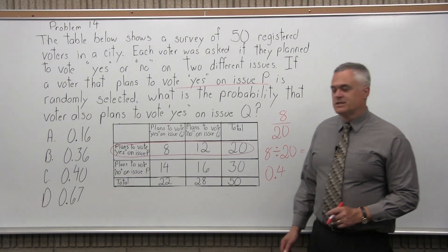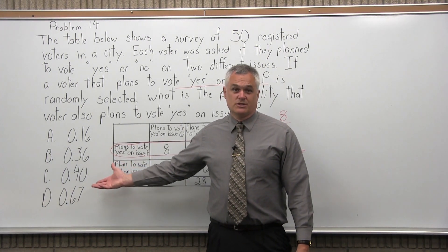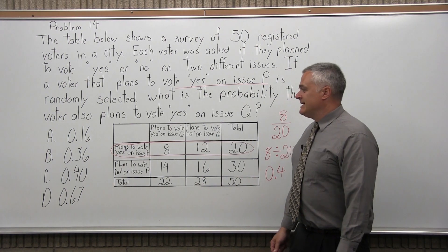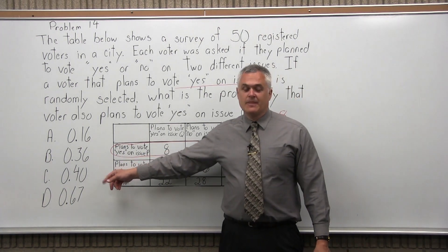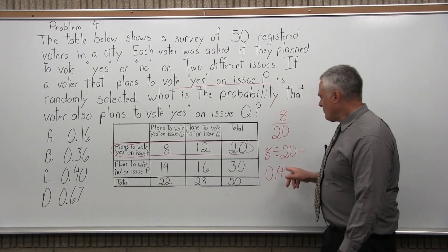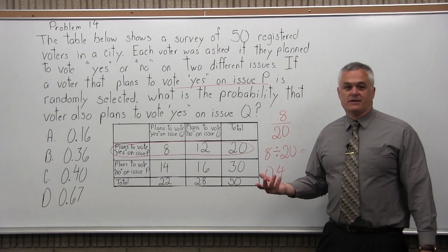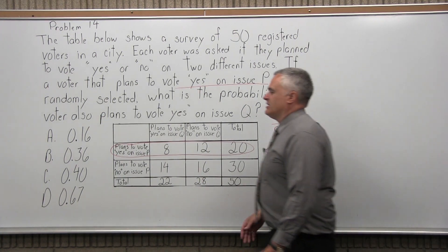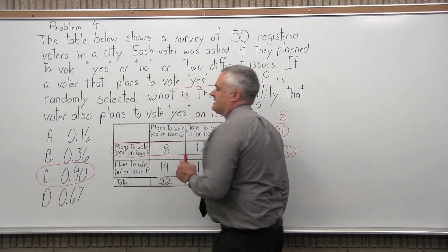If you went on a calculator, that's what it will say. Now that's getting pretty close to option C. It's certainly closer to C than to any of the other options. Is that the same, 0.4 and 0.40? In fact, it is. You can add zeros after or to the right of the decimal, and it doesn't really change it. So the answer for problem 14 is option C.